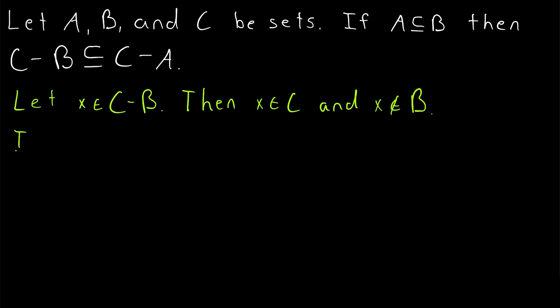And we can get there pretty easily. What do we know about any element of A? So if our element x is in A, what do we know must be true? Well, since A is a subset of B, if x is an element of A, then x must be an element of B. But we know that x is not an element of B.